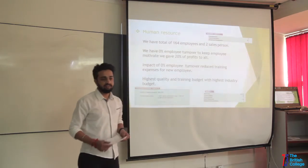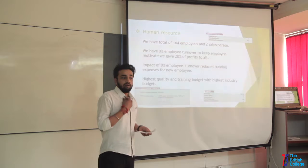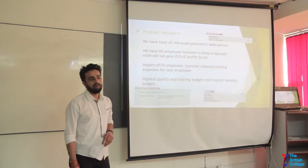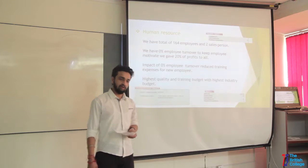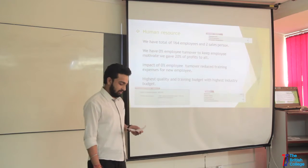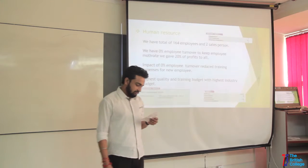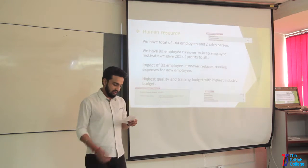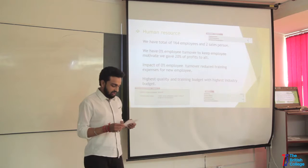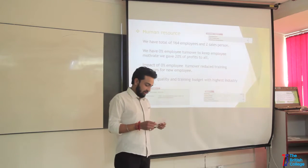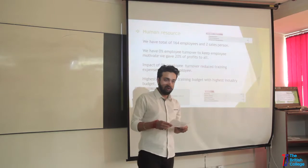Talking about employees: we had a total of 164 employees and 2 salespersons at the end of Quarter 9, which showed 0% turnover. In the first quarter, 6 staff resigned from the company. But after we started promotional activities and gave 20% profit to all employees, no staff left our company, giving us 0% turnover. We had the highest quality and training budget in the industry. We focused on the blue ocean strategy by allocating $80,000 on quality and training budget.